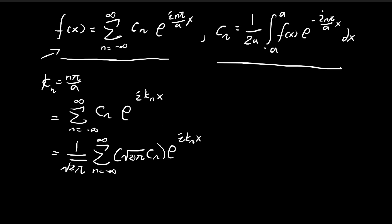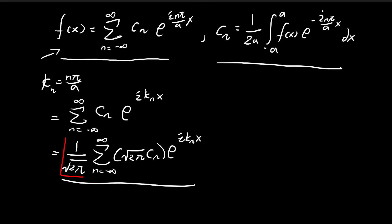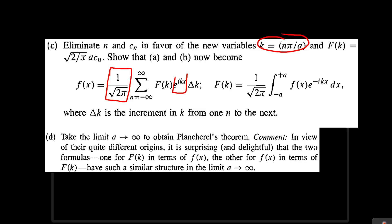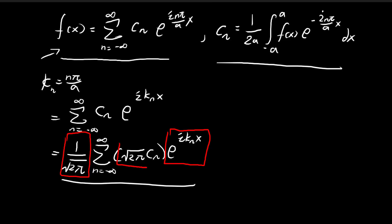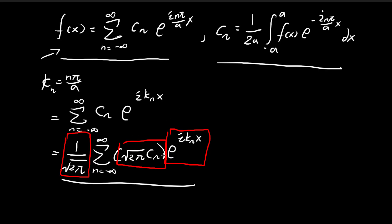Now that we've moved to this point, you can compare what we have with what we want to arrive at. Both terms have this 1 over the square root of 2 pi, and both have e to the power of i k_n x. The only difference is that here we have the square root of 2 pi times c_n, while there we have f of k times the change in k. So it seems to suggest that f of k times delta k is going to equal the square root of 2 pi times c_n.